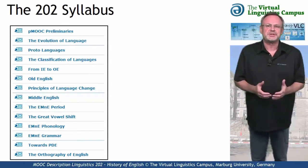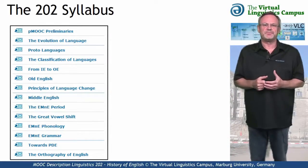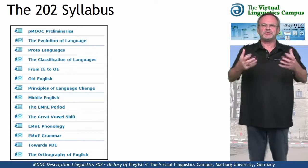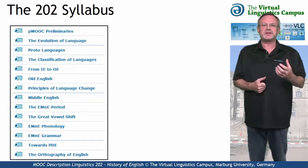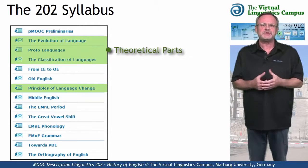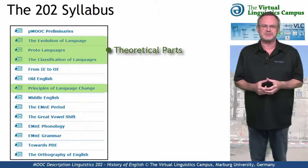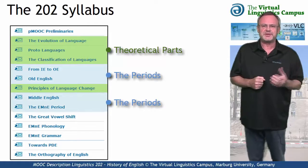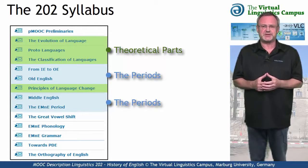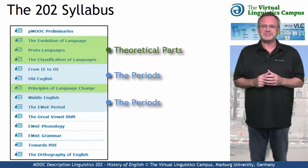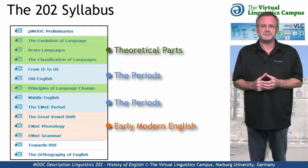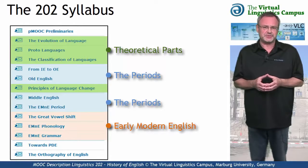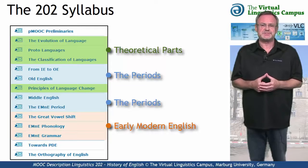Let us now look at the content of Linguistics 202. The class is subdivided into three central parts. In order to understand the development of English, we will first look at the central principles of reconstructing and classifying languages. The second part is devoted to the discussion of the developmental phases of English and their central linguistic aspects, with special emphasis on early modern English phonology, including a detailed discussion of the great vowel shift, one of the most influential sound shifts in English.